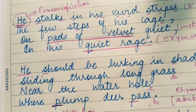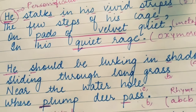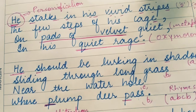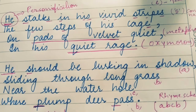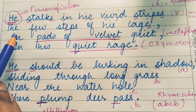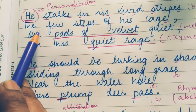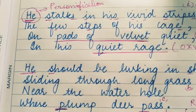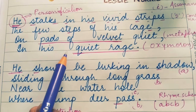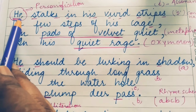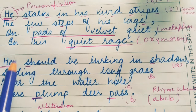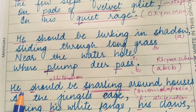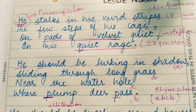Now, in this poem the poet has used various poetic devices. The first device is personification. In this poetic device, human qualities are given to a non-living or inanimate thing — treating non-human objects as human beings. Here, the tiger has been referred to as a person, and the poet has used the pronoun 'he' for the tiger: 'He stalks,' 'his vivid stripes,' 'he should be lurking,' 'he should be snarling.' This is an example of personification.